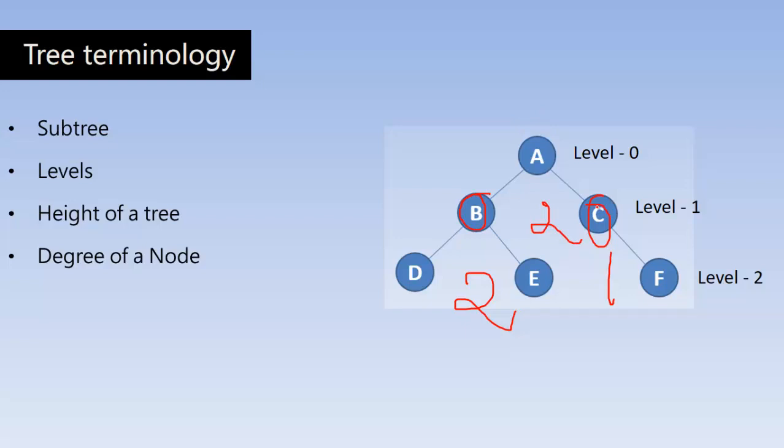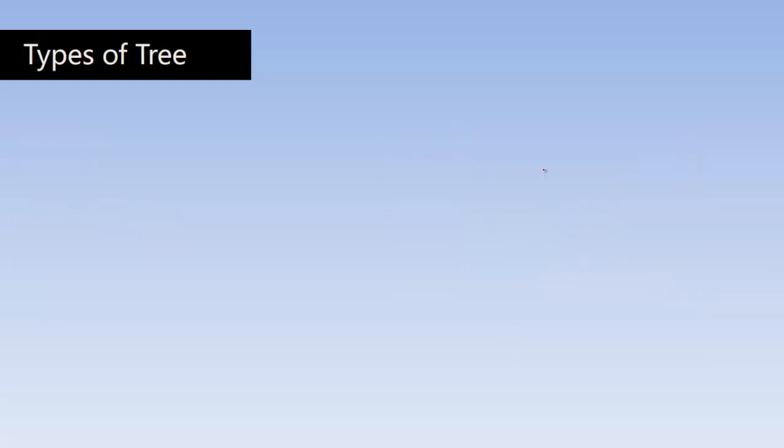What are the different types of tree? There is a binary tree which is one of the types of tree. And binary search tree is there, AVL tree, B tree and B plus trees. These are the most important and most frequently used types of trees which we will be covering in the later videos.